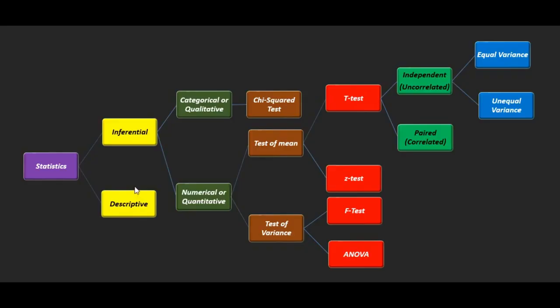In inferential statistics, things are different. We actually don't know about the behavior of the population, so we have to make some assumptions. We do sampling of the data and check if those assumptions are applicable to those samples. There are two types of datasets inside inferential statistics: categorical and numerical. Categorical is something which can be categorized, and numerical is continuous data.